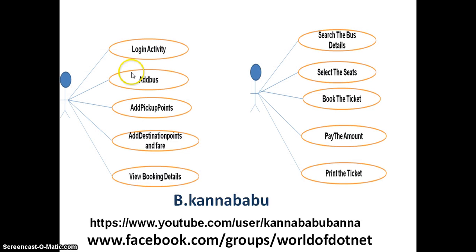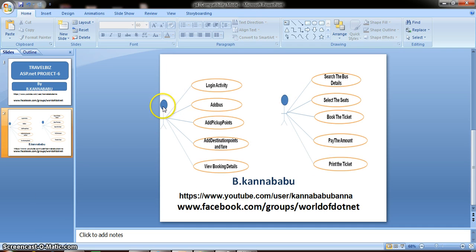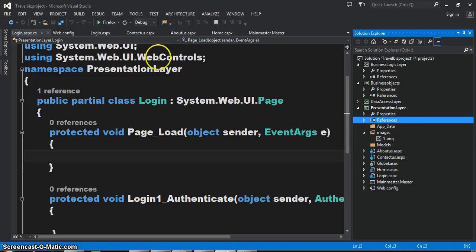In our project there are basically two types of modules: one is the admin module and the other one is the user module. Admin will first log in and he will add the bus details, the pickup points, the destination points, as well as the fare, and he can view the booking details. So first the admin will login with his username and password.